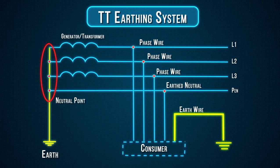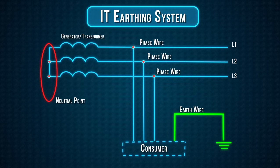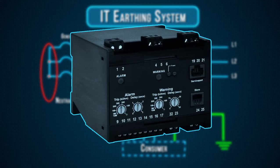In an IT network, the electrical distribution system has no connection to earth at all, or it has only a high impedance connection. In such systems, an insulation monitoring device is used to monitor the impedance.